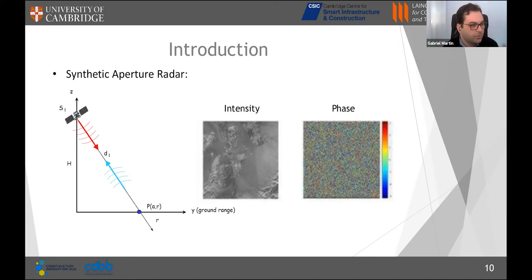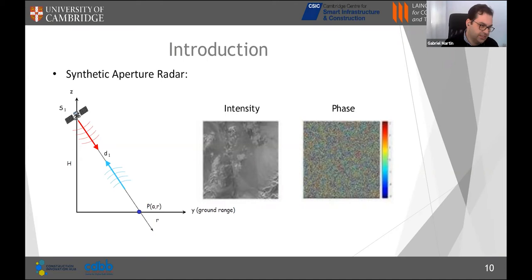In SAR, the satellite emits pulses; the signal reaches the surface of the Earth and at certain points called scatterers it is reflected back to the satellite. By measuring the echo from all these scatterers we can build an image. Because the signal has two properties — amplitude and phase — we obtain two images: an intensity image and a phase image. The intensity image looks like a normal image, but the phase image alone is not directly interpretable.